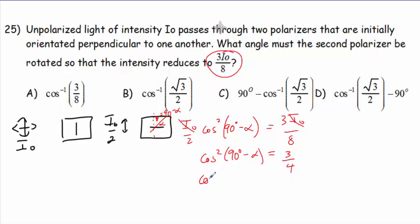Take the square root of both sides. cos of 90 minus alpha would be equal to the square root of 3 over 2.